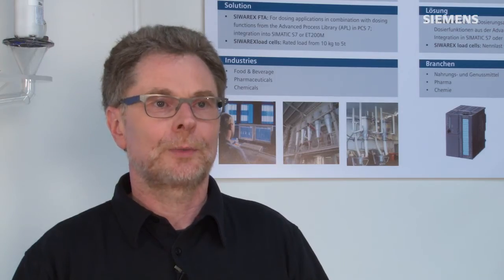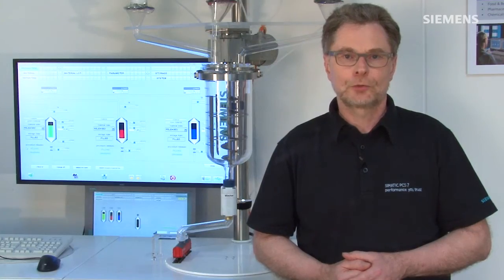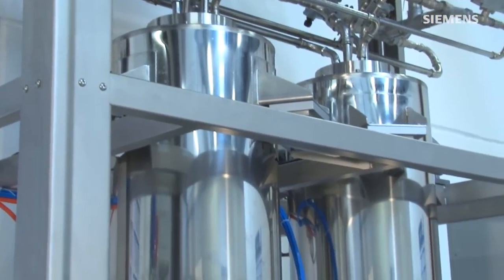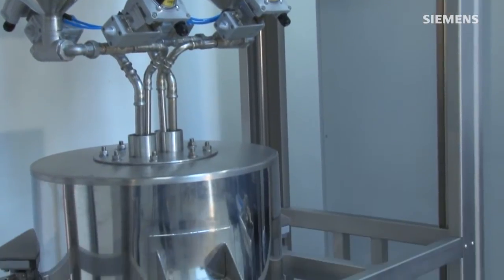APF can be used to automate batch-oriented processes, using simple recipe structures such as simple parameter recipes. Typical applications include small to medium-sized mixing plants and fixed sequential control systems that are operated with different parameter sets.